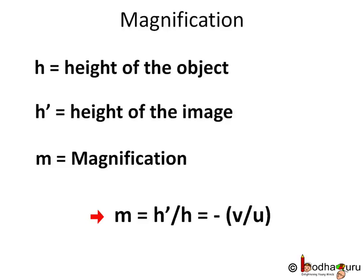Height of the object h is positive as it is placed above the principal axis. Height of the image formed h' will be positive for a virtual erect image, as the image formed is above the principal axis.